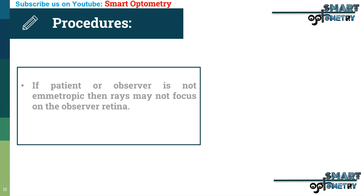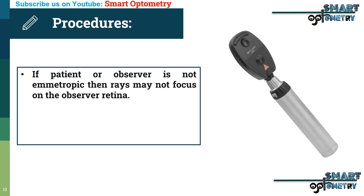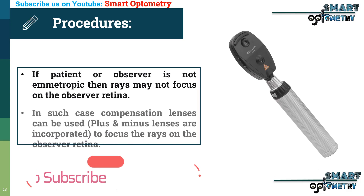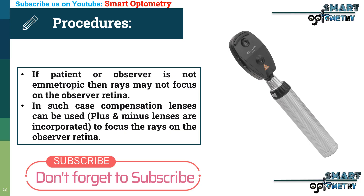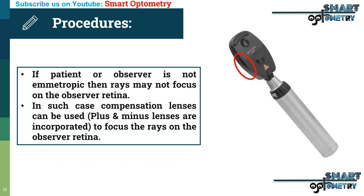If the patient and observer are not emmetropic, then rays may not focus on the observer's retina. In such a case, compensation lenses can be used to focus the rays on the observer's retina. Compensation lenses — spherical plus and minus lenses — are incorporated inside the ophthalmoscope. As only spherical plus and minus lenses are incorporated, if any patient or observer has cylinder power, we can simply use the spherical equivalent.